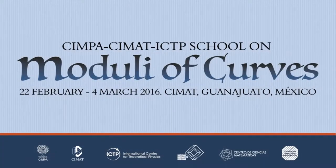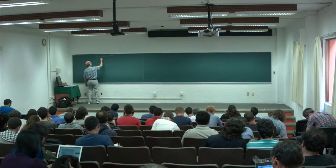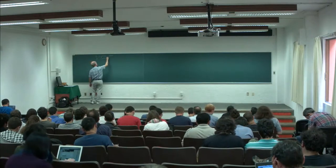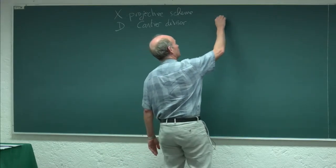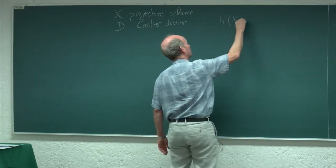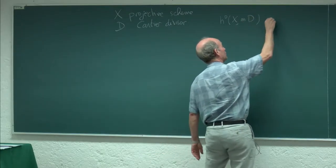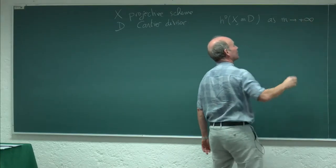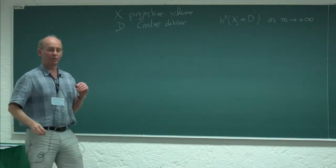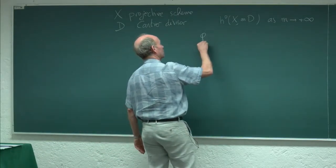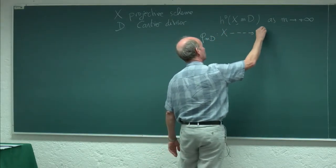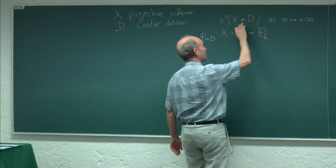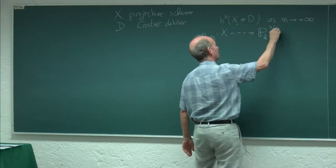This is a projective scheme over a field, and this is a Cartier divisor. I more or less studied the behavior of the dimensions of the multiples of D as m goes to infinity. I'll try to summarize what we saw. We might as well look at the induced rational maps associated with these spaces of sections. Here we have some projective space whose dimension is this number minus 1. Let me write N_m.